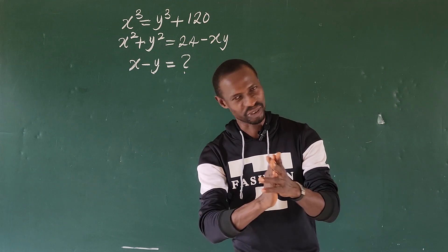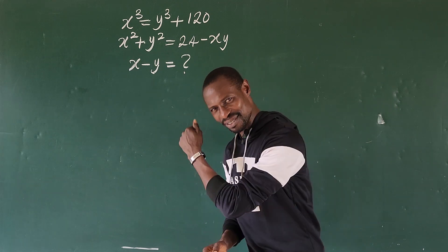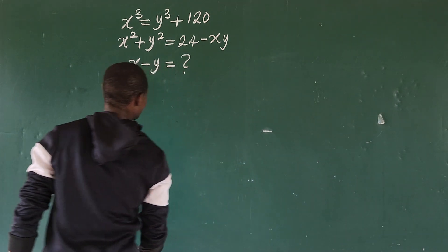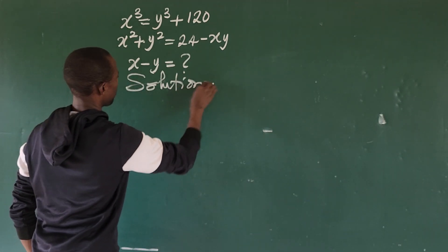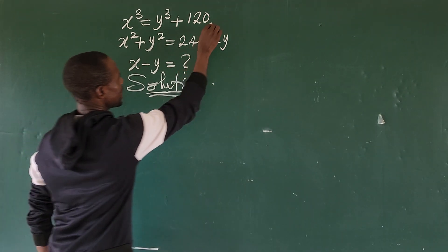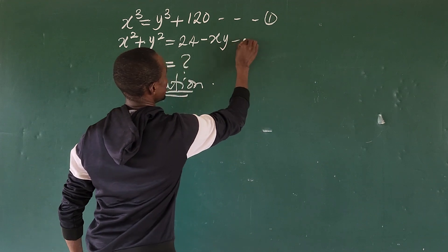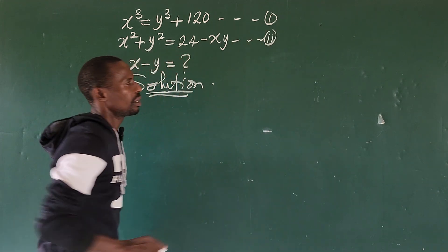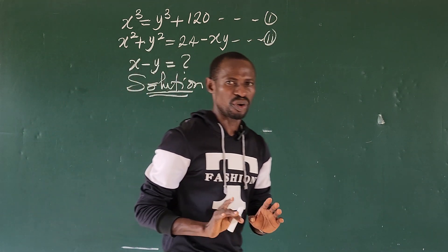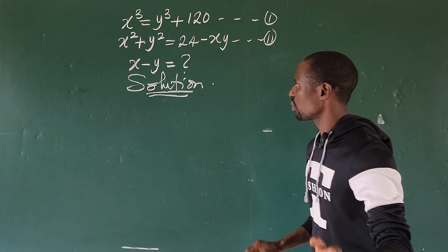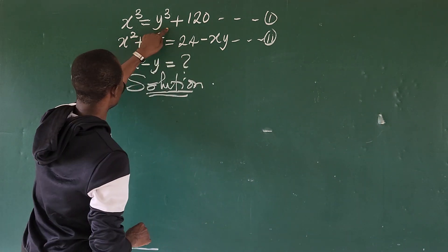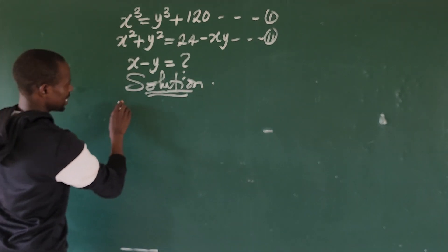Very easy, not much introduction these days, straight to solving. So here we take our solution. Let's give this equation one and this equation two. Now we can rewrite equations one and two in a very simple way.